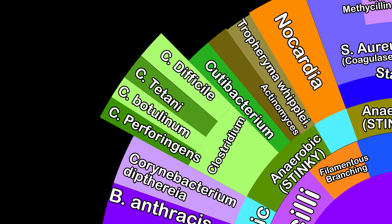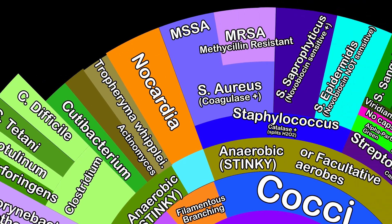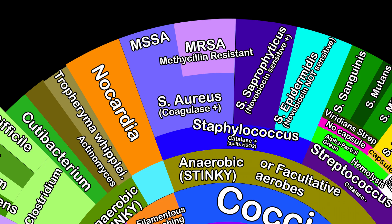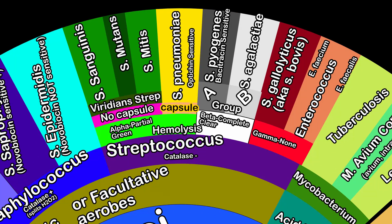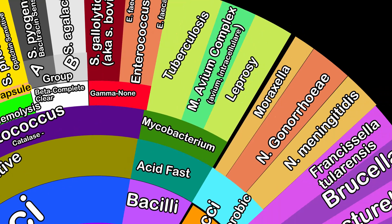Clostridium, which encompasses tetanus, botulism, and C. diff. Staphylococcus, most recognizably Staph aureus, which is further split into methicillin-resistant, aka MRSA, or not, MSSA. Streptococcus has a lot of different bugs, and they are divided by how they hemolyze blood: alpha hemolysis means partially, beta is totally — the agar turns clear when it is grown — and gamma is not at all. Finally, there is the acid-fast bacilli, mycobacterium; tuberculosis and leprosy are well-known bugs here.